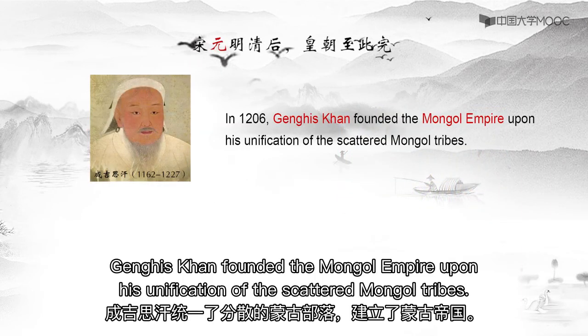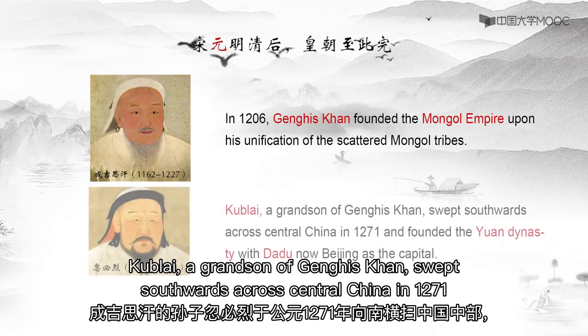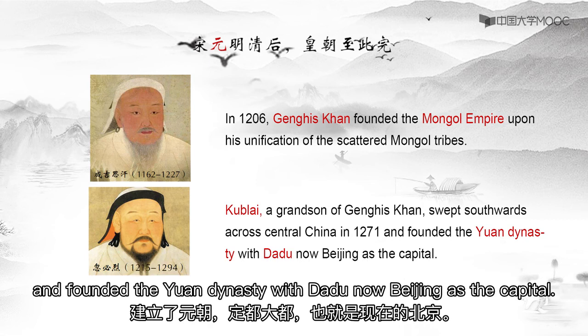In 1206, Genghis Khan founded the Mongol Empire upon his unification of the scattered Mongol tribes. Kublai, a grandson of Genghis Khan, swept across Central China and in 1271 founded the Yuan Dynasty, with Dadu — now Beijing — as its capital.